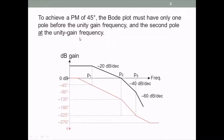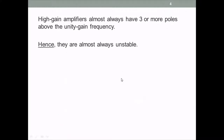To achieve a 45 degree phase margin, if you look at the Bode plot, in the magnitude plot there can be only one pole above the unity gain or 0 dB frequency, and the second pole must be at the unity gain frequency. Such a Bode plot has a phase margin of 45 degrees. We also saw that high gain amplifiers almost always have three or more poles and therefore are almost always unstable.